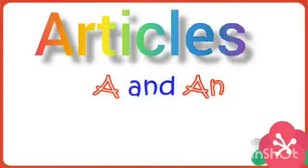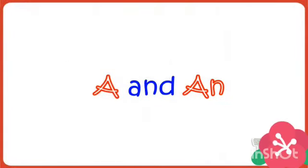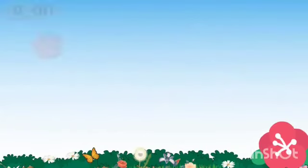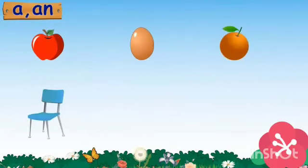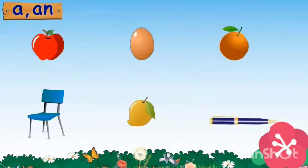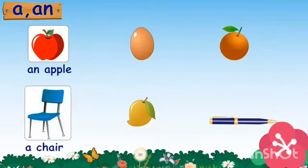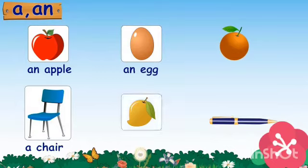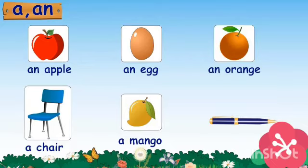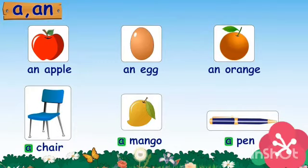Good morning, kids! Today we are going to learn about the articles A and AN. Here we have some objects. Let's name them. This is an apple. This is a chair. This is an egg. This is a mango. This is an orange. This is a pen. Why is there A before some names and AN before certain names? Let's find the solution.